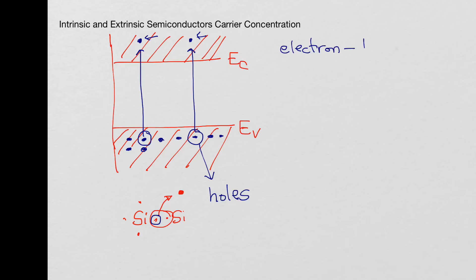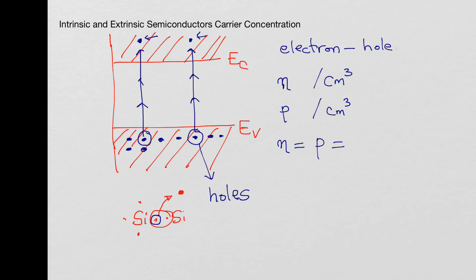For each electron that moves into the conduction band, there is a hole created. So in intrinsic silicon with no impurities, the concentration of electrons n (in per centimeter cube) and the concentration of holes p (also per centimeter cube) should both be equal, because for every electron that escapes to the conduction band a hole is created. This means n equals p equals ni — we call this the intrinsic concentration.